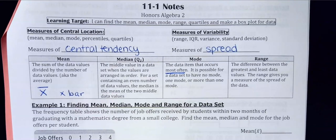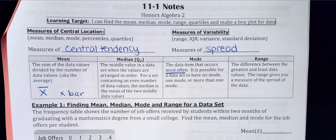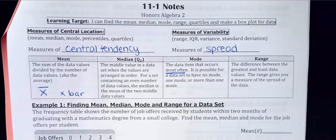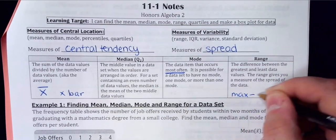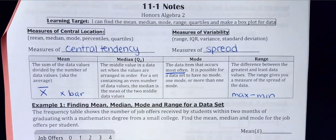Mode is the data value that occurs most often — I always remember 'mode is most often.' Depending on your data set, you could have two modes, three modes, no mode if no values are repeated, or just one. You can have zero, one, or more modes. Range is simply the maximum value minus the minimum value — how far from the least value to the greatest value.